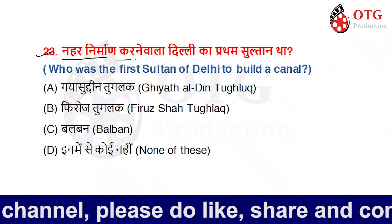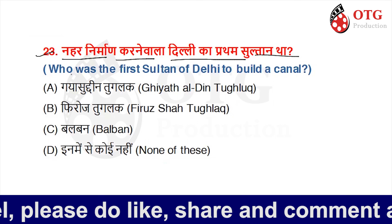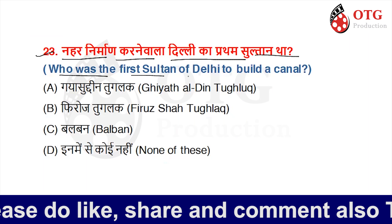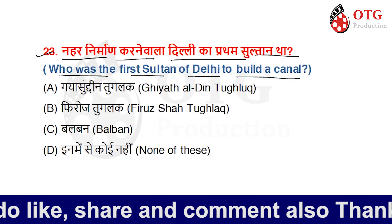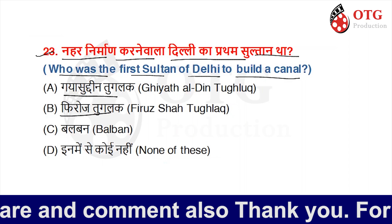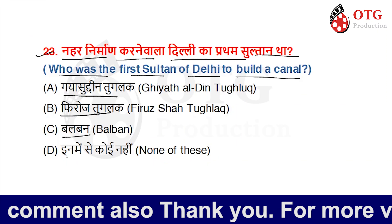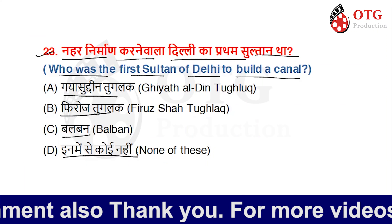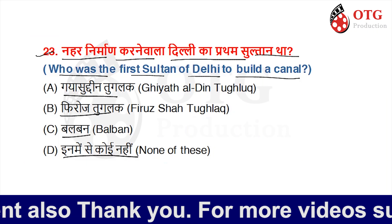Who was the first Sultan of Delhi to build a canal? Option A is Ghiyasuddin Tughlaq, Option B is Firoz Tughlaq, Option C is Balban, and Option D is none of these. Your time starts now. The right option is Option A, Ghiyasuddin Tughlaq.